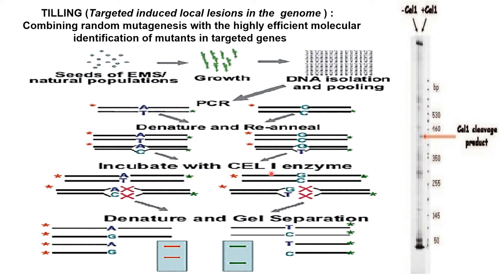This heteroduplex complex will be cleaved with the help of an enzyme called CEL1, which is isolated from celery. This enzyme will cleave only the heteroduplex — that is, the single nucleotide polymorphic region — specifically.